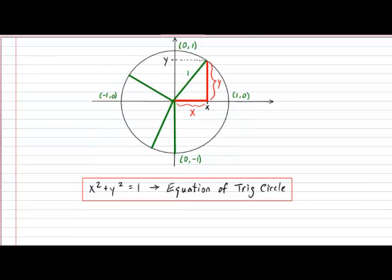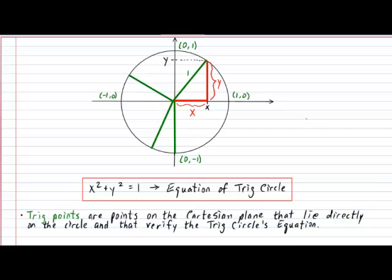Because the trig circle is such a very special circle, the points on the Cartesian plane that lie directly on the circle are equally special. They are known as trig points. Trig points are points on the Cartesian plane that lie directly on the circle and that verify the trig circle equation.